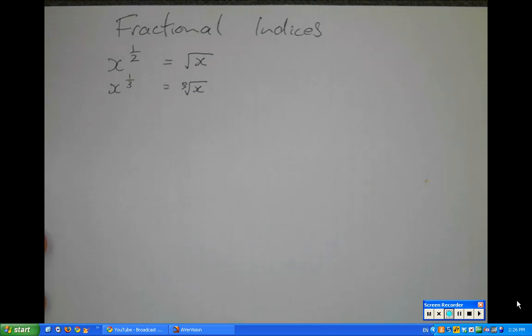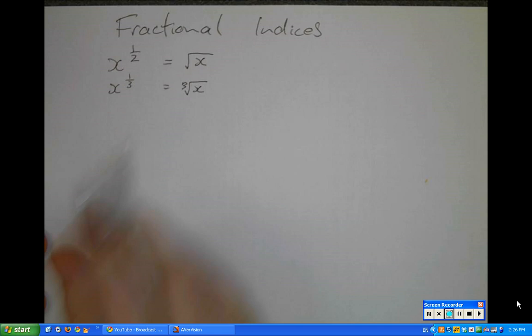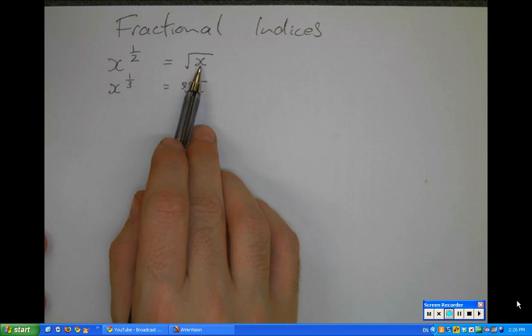So what does that mean? Well, a square root we know is the number when multiplied by itself gives you the number on the inside here.